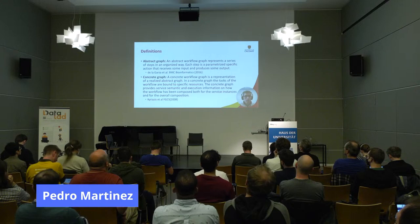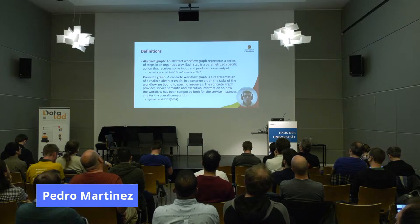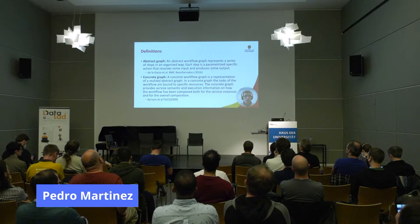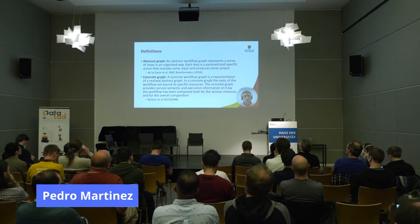An abstract graph, as its name indicates, is an abstract representation of a workflow. Therefore, the nodes have little information associated with them. In our approach, a concrete graph is derived from provenance, and every node will have information about paths, commands, dependencies, and other items used to produce a specific data file or dataset.